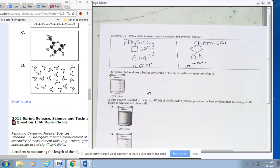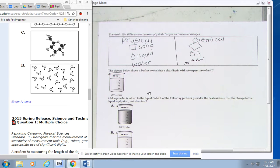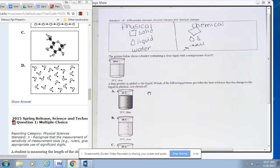All right, so it says the picture below shows a beaker containing a clear liquid at a temperature of 20 degrees Celsius. A blue powder is added to the liquid. Which of the following pictures provides the best evidence that the change to liquid is physical?